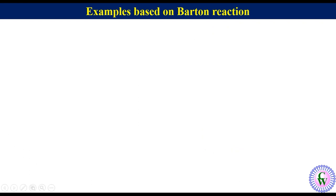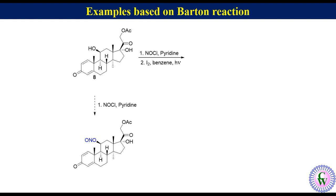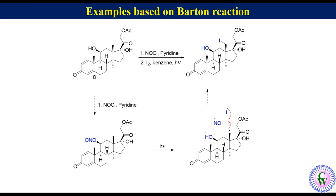Now let's predict the structure of the product when compound 8, which is prednisolone 21 acetate, is allowed to react with nitrosyl chloride in pyridine and the product formed undergoes photolysis in the presence of iodine in benzene. Compound 8 reacts with nitrosyl chloride to produce the nitrite. Here we should note that in this reaction the less hindered secondary alcohol preferably involved in the reaction. Photolysis of this nitrite produces an alkyl radical and NO radical. The alkyl radical reacts with the more reactive iodo radical to produce this iodo compound.